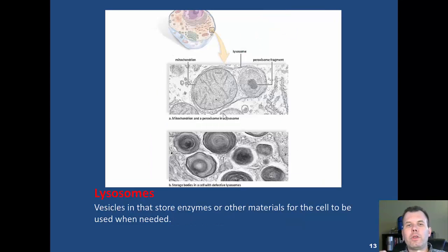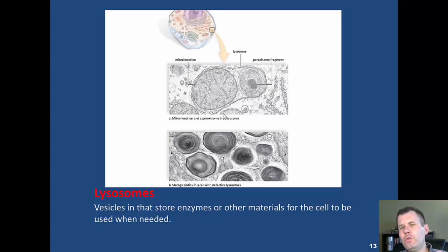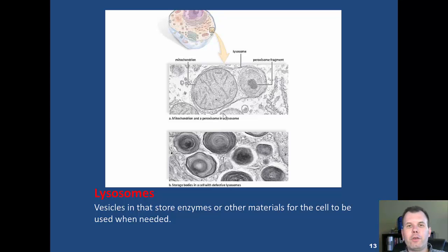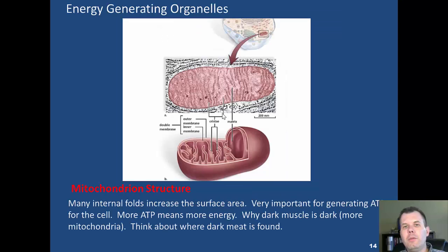Lysosomes are membrane-bound organelles that store digestive materials for when the cell eats. They're found primarily in animal cells, because animal cells have to eat in order to get energy. You see lysosomes associated with digesting materials that come into the cell through phagocytosis.